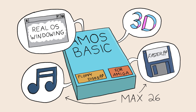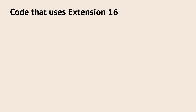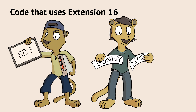Amos Basic has 26 extension slots. Looking at my code, I saw a lot of use of extension 16 functions. What was extension 16? According to a handy list on the internet, there were two possibilities. One of them talks to a very specific type of bulletin board system. The other: useful functions for string processing.